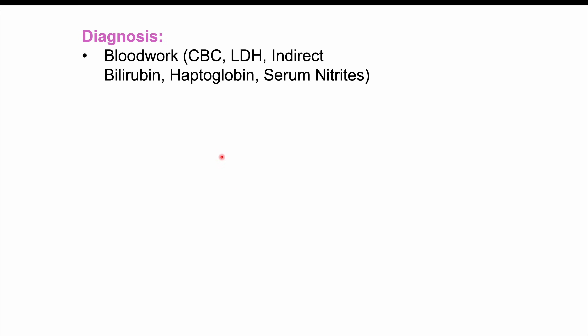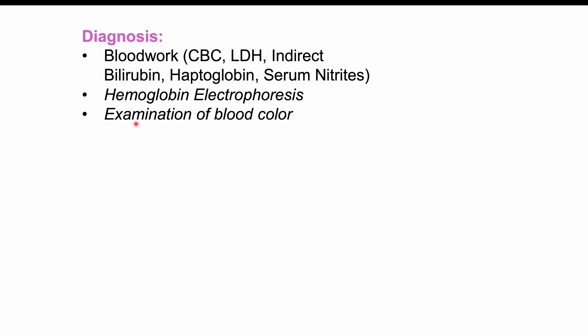To diagnose methemoglobinemia, it's important to do blood work: CBC, LDH or lactate dehydrogenase, indirect bilirubin, haptoglobin — looking for hemolysis. Serum nitrites can be important if nitrate exposure is suspected. Hemoglobin electrophoresis, looking for hemoglobin M, is important if suspecting the autosomal dominant congenital form. An interesting bedside test is examination of blood color — from about 15% methemoglobin, blood takes on a dark chocolate brown coloration. If it remains dark brown after being exposed to room air or oxygen, that can be a sign of methemoglobinemia.